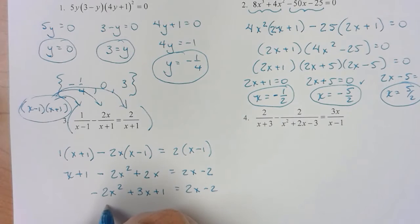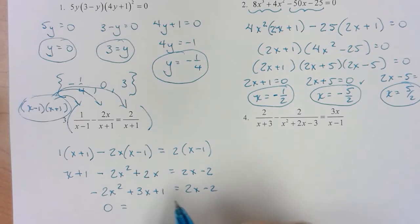So I'm going to add that to both sides. I'm going to end up with 0 on this side is what I'm wanting to do. Subtract that from both sides. Subtract that from both sides. Now you need to go and factor this.